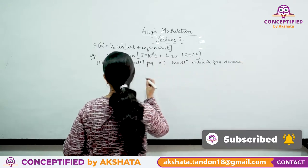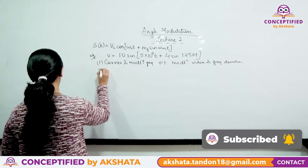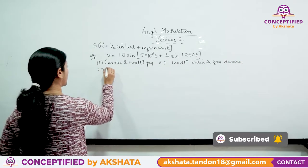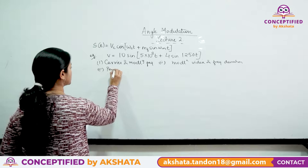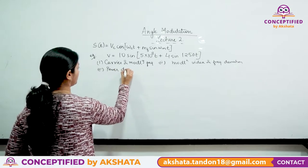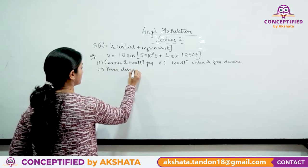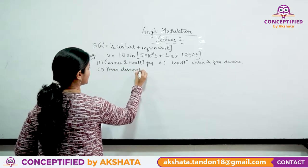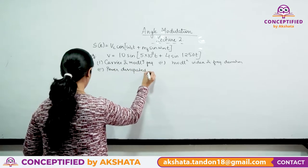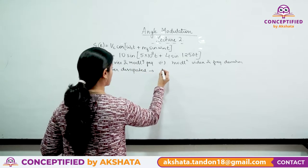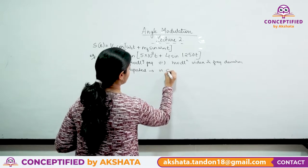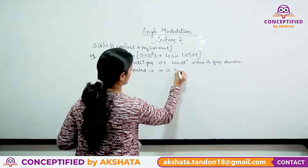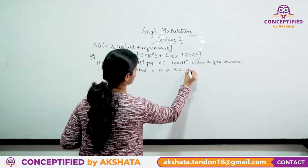The second part asks for modulation index and frequency deviation. The third part asks for power dissipated in a 5-ohm resistor.